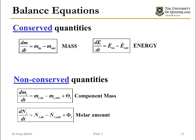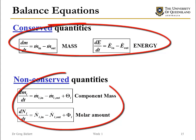Here we can see this very clearly. On the left we've got our balance for the total mass in the system; on the right, our balance for the total energy in the system. This contrasts against the non-conserved quantities: component mass and molar amount. But these two conserved equations are very similar. We can group these into two types of equations: conserved quantities and non-conserved quantities.